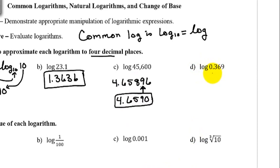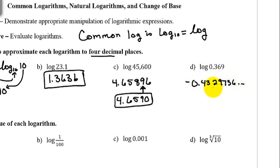The last example is log of 0.369. Push the LOG button on your calculator, type in 0.369, and hit enter — I get negative 0.4329736 and more digits. We want four decimal places, so we're rounding the 9 position. The number immediately following is a 7, and because 7 is five or bigger we round the 9 up, giving us negative 0.4330.